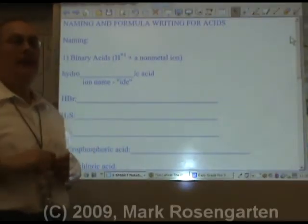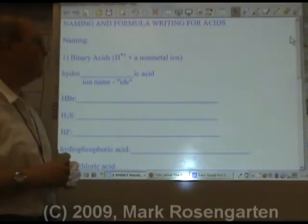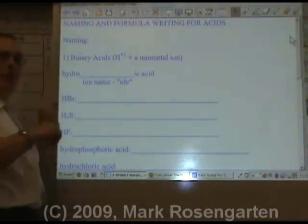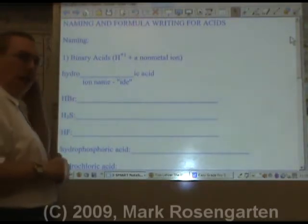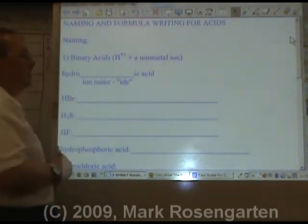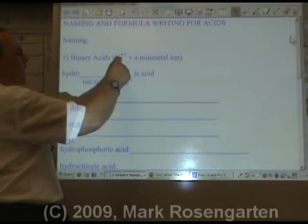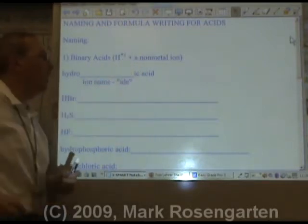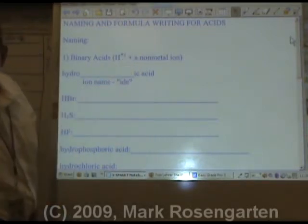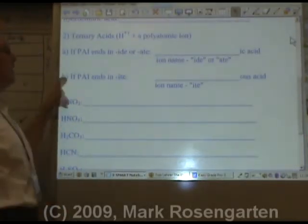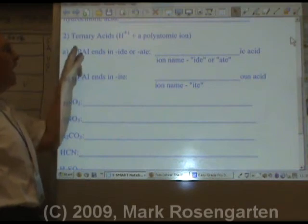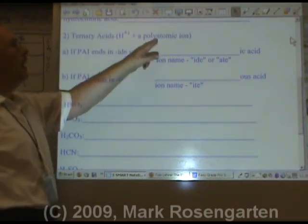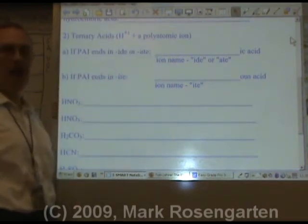Formula Writing and Naming of Acids. There are two kinds of acids you can have: binary acids, which are made of a hydrogen plus a non-metal ion, and ternary acids, which are made of hydrogen with a polyatomic ion from Table E.